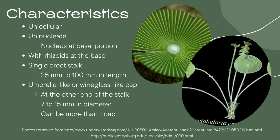Let us now look into the characteristics of Acetabularia creniolata. This species, being a member of Genus Acetabularia, is characterized as unicellular and uninucleate, with its nucleus found at the basal portion of the organism. Acetabularia species also have similar morphologies. Rhizoids, or root-like structures, are found at the base of the organism. These extend from a singular stalk, which has an umbrella-like or wineglass-like cap at its other end, thus giving it the nickname Mermaid's Wine Glass. The stalk of Acetabularia creniolata may grow from 25 mm to 100 mm, while the cap can be as big as 7 mm to 15 mm in diameter. Several caps may also be developed in an individual.